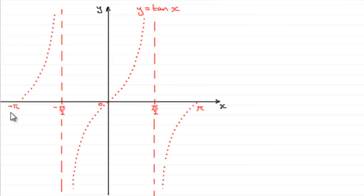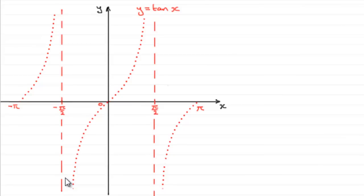That's the equivalent of minus 180 degrees to 180 degrees. It's a graph that you should be familiar with. We've got our asymptotes here at pi upon 2 and minus pi upon 2. The curve would normally be a solid curve, but I've just done it as dotted at the moment.